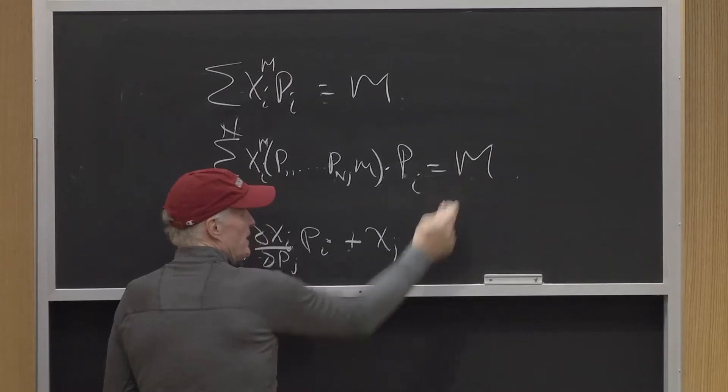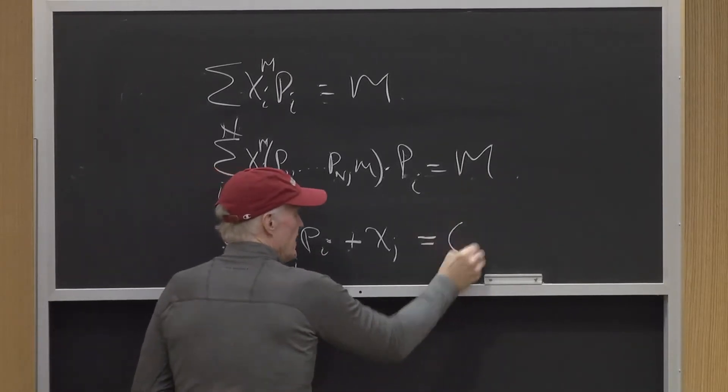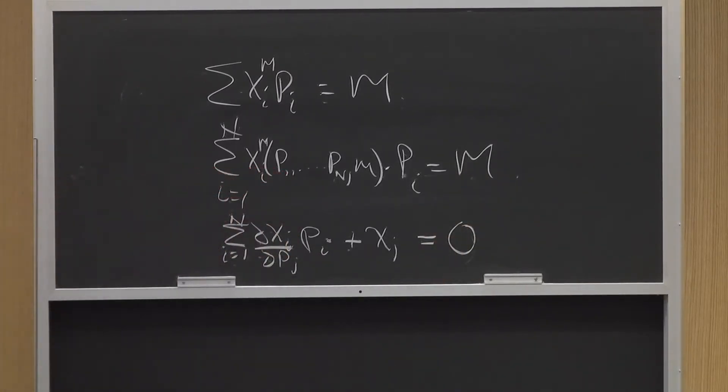the derivative with respect to pj when it shows up here is xj. And of course, this doesn't depend on good j, on pj, so that's zero.